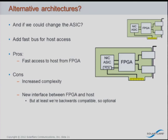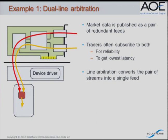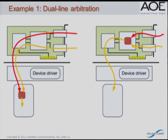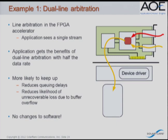Two application examples. First, market data redundancy arbitration: exchanges publish data in two copies (A and B) for redundancy, and traders need both for redundancy and because they don't know which will have lower latency. Currently arbitration is done in software. Moving it to the FPGA halves the data rate going into the server, reducing queuing delays and preventing buffer drops. This acceleration is completely transparent to software — no software changes required.